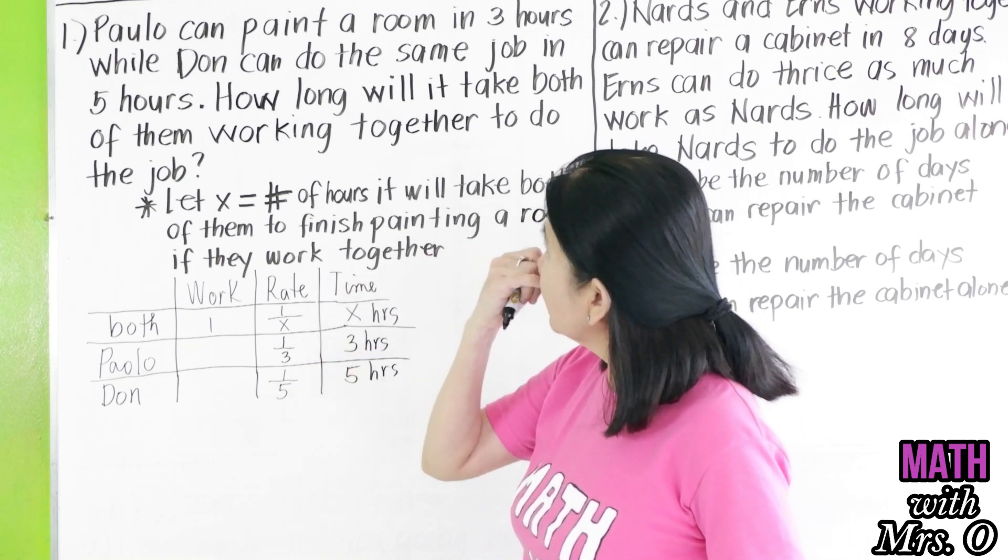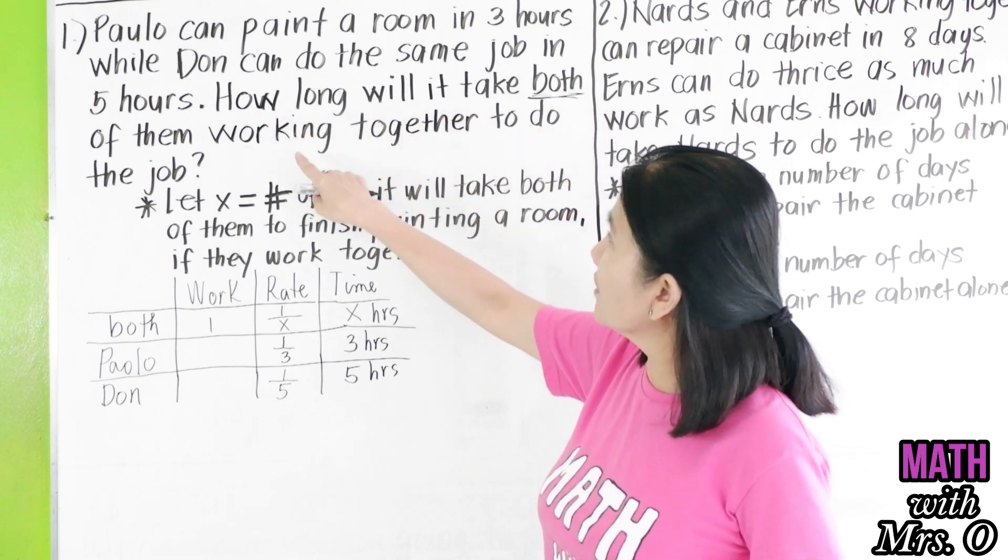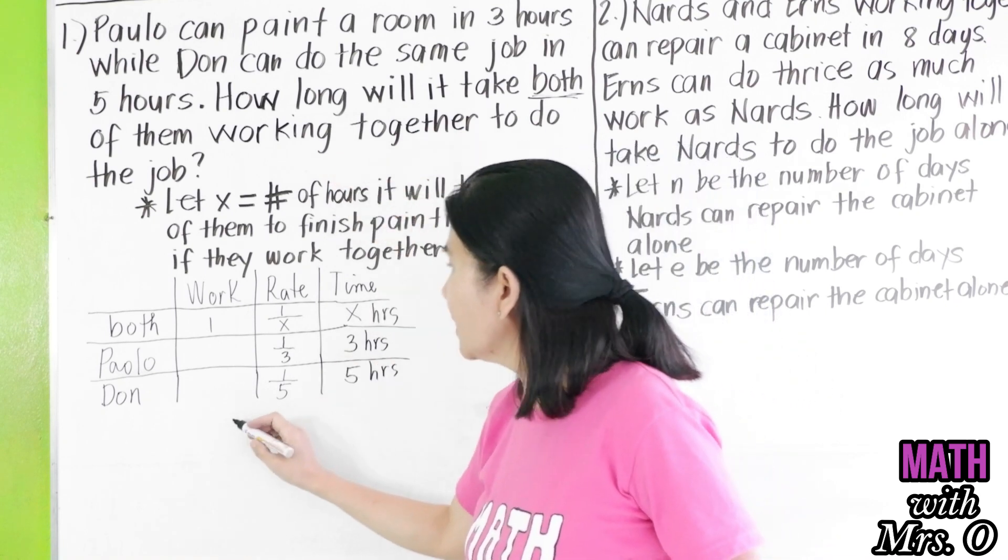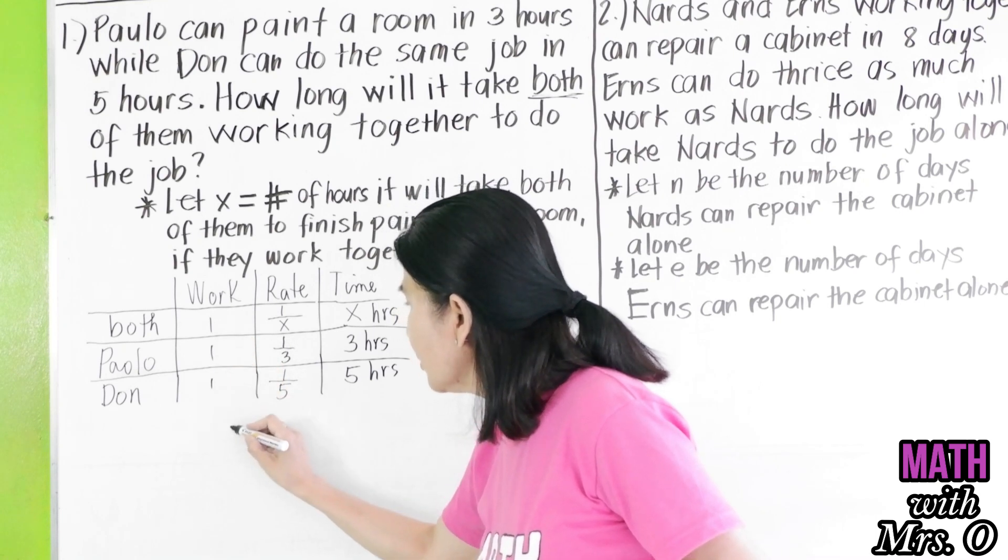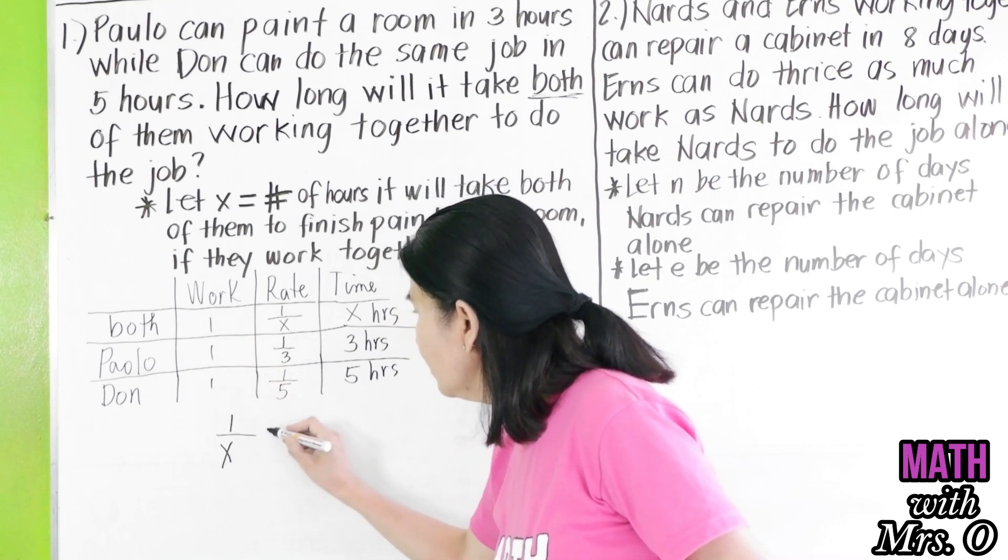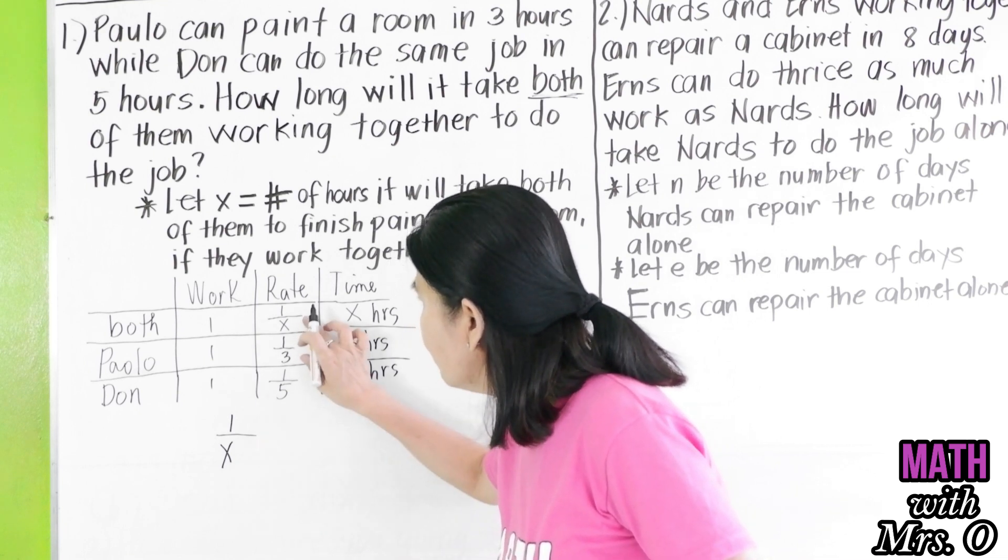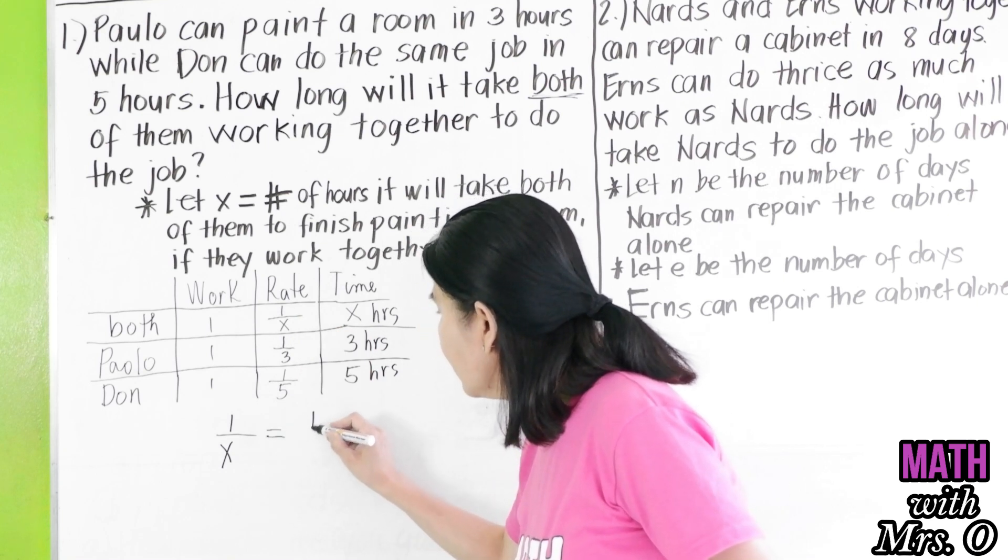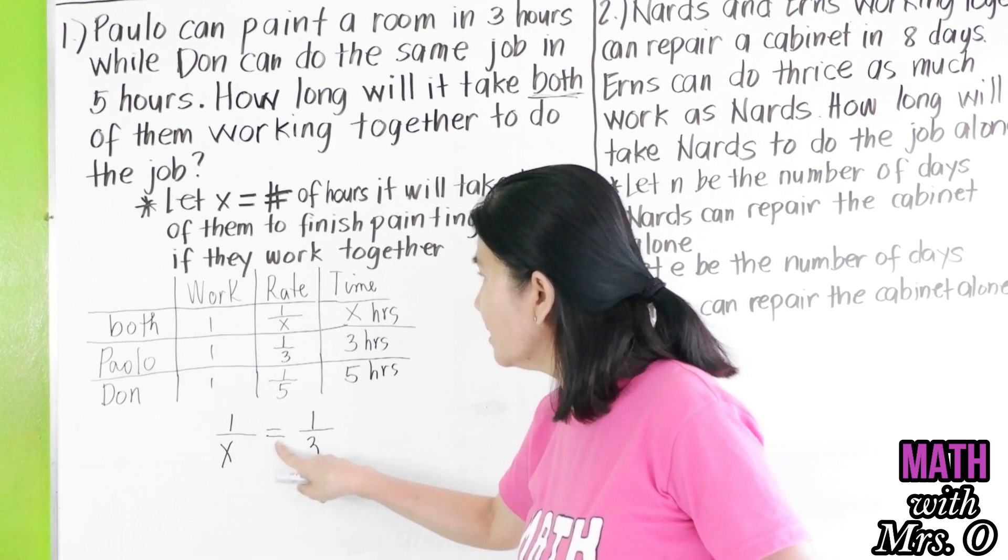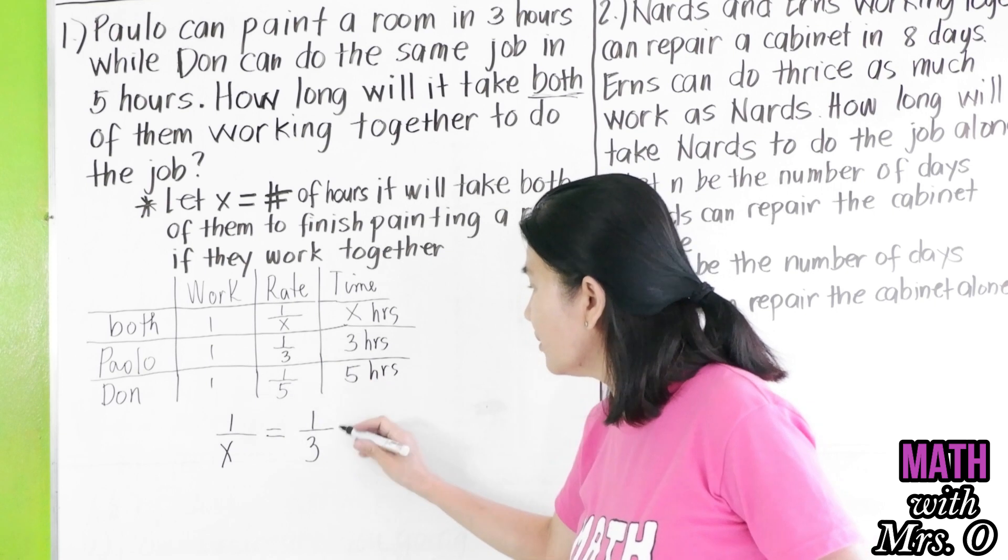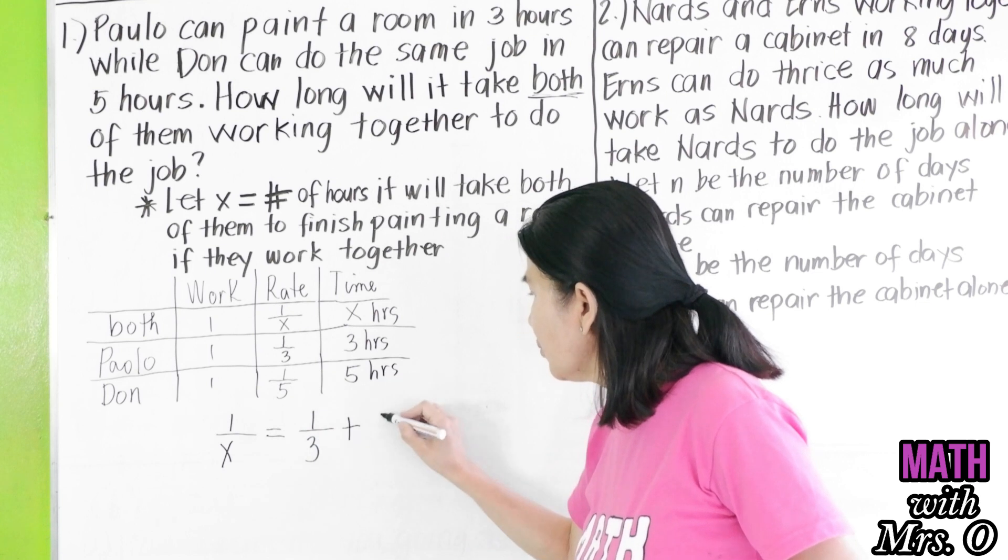Now, the problem is how long will it take both of them working together to do the job. So we have here, this is one work for all. So the rate of both is one over X equals the rate of Paolo, which is one third, plus the rate of Don, which is one fifth.